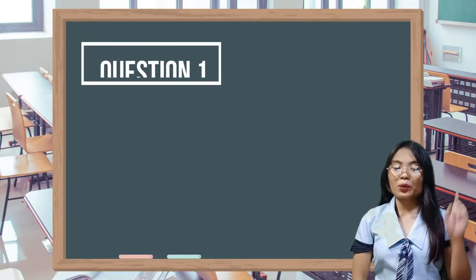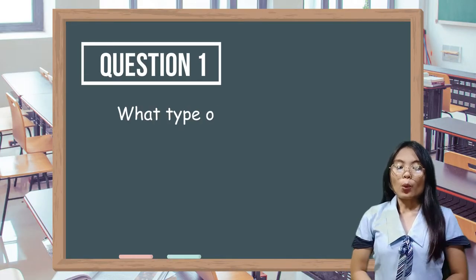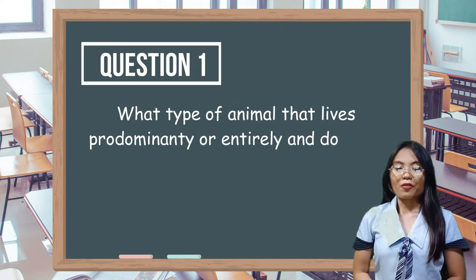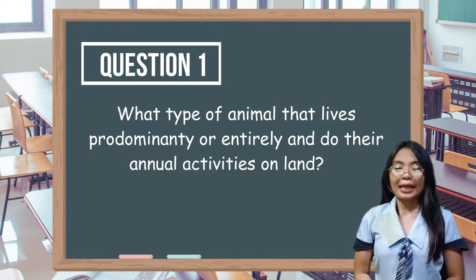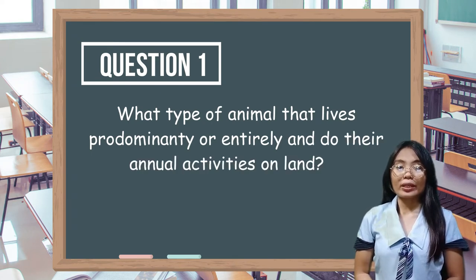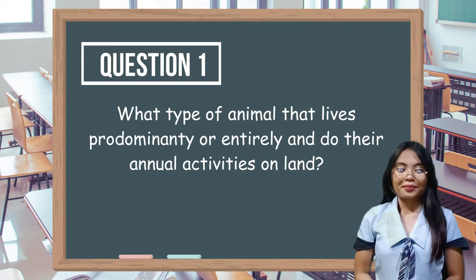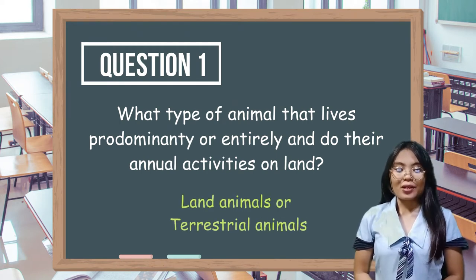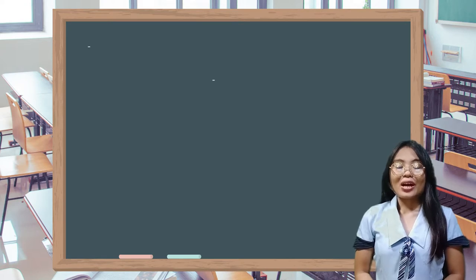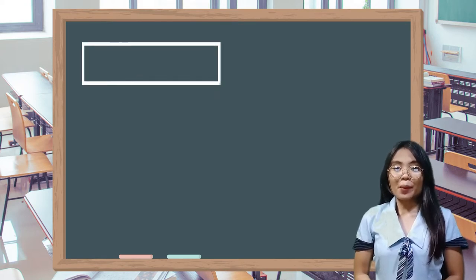Question number 1: What type of animal lives predominantly or entirely and does their annual activities on land? The answer is land animals, or terrestrial animals.